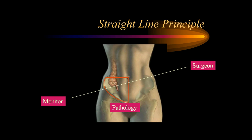The straight line principle: for example, in a case of appendicitis, we stand on the patient's left, we look at the right iliac fossa, and the monitor is just in front of us at the level of the patient's right hip. So the surgeon, the pathology (the appendix), and the monitor form a straight line — a straight optical axis.